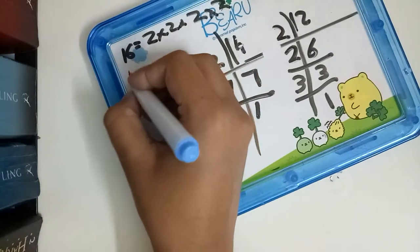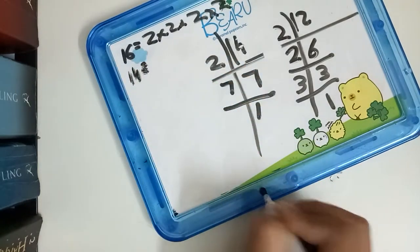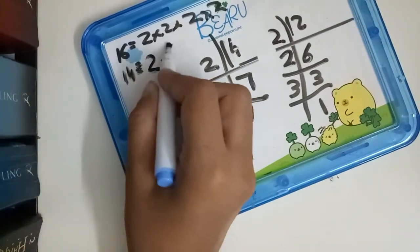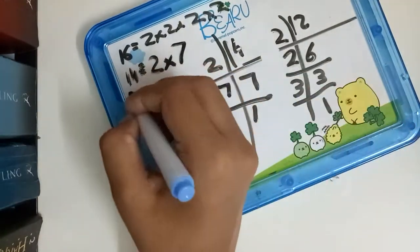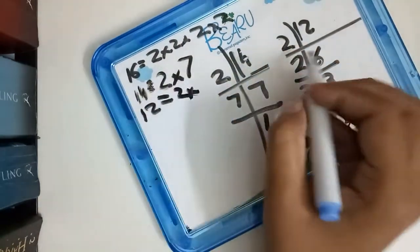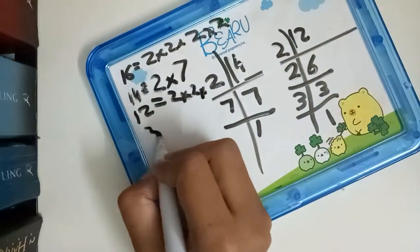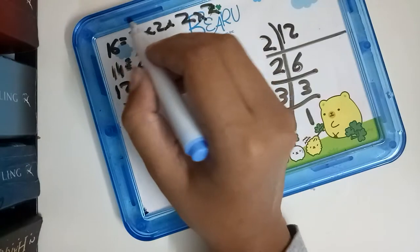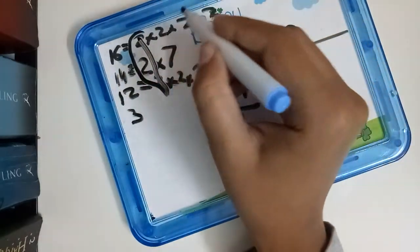14 is equal to 2 multiplied by 7. And 12 is equal to 2 multiplied by 2 multiplied by 3. Now let's find the common factors.